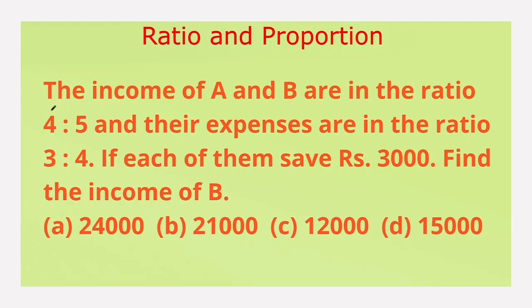Our first question: the income of A and B are in the ratio 4:5 and their expenses are in the ratio 3:4. If each of them saves rupees 3,000, find the income of B. The given options are: option A 24,000, option B 21,000, option C 12,000, option D 15,000.